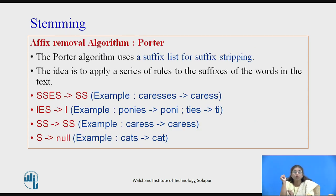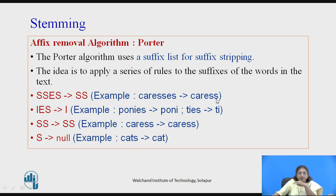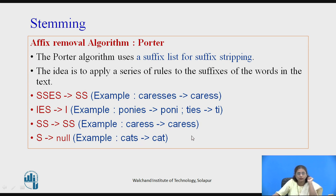One algorithm is the affix removal algorithm, known as the Porter algorithm. It uses a suffix list or suffix stripping — the idea is to apply a series of suffix rules to the words in a text. For example, converting from plural to singular form, or from past tense to the original verb form. As rules: 'SSES' is replaced by 'SS'; 'IES' is replaced by 'I', so 'ponies' becomes 'pony'; 'ties' becomes 'tie'; 'SS' stays the same; and 'S' can be replaced by null, so 'cats' becomes 'cat'.